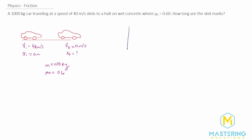Let's draw a free body diagram. We have the car, and going up perpendicular to the surface is the normal force, while straight down is always the weight. Going backwards we have the kinetic friction. Since the car is skidding, there's no force from the tires or the engine pushing it forward, so the acceleration is going in the negative x direction. We sum the forces in the y direction: normal is positive y, weight is negative y, and together they equal zero because there's no acceleration in the y direction.